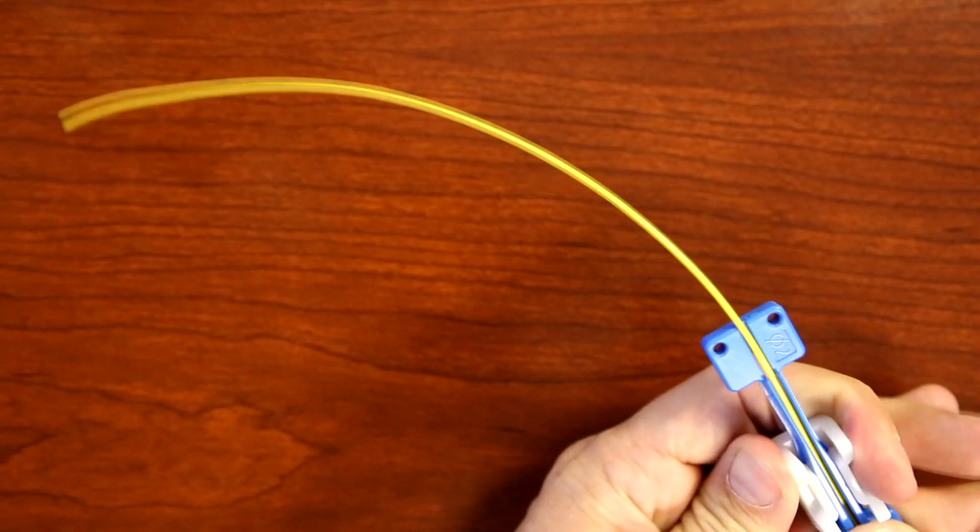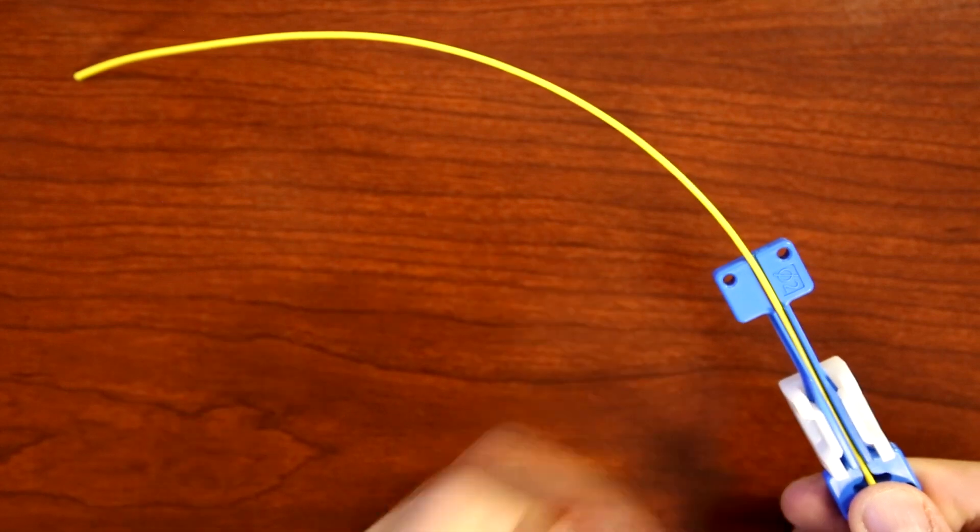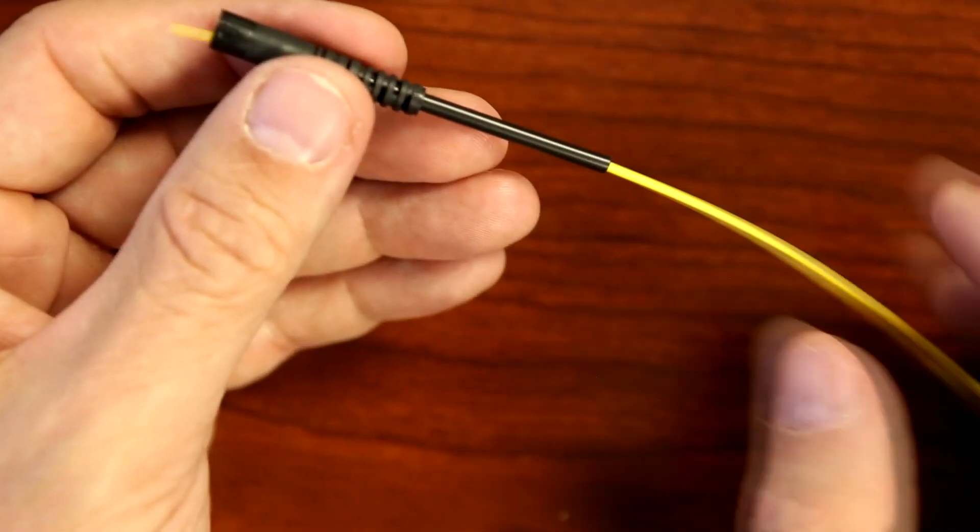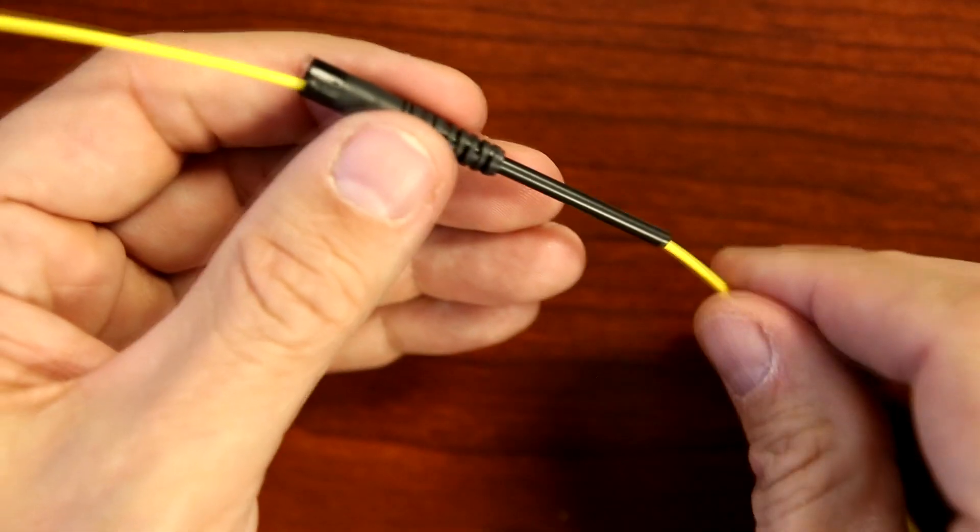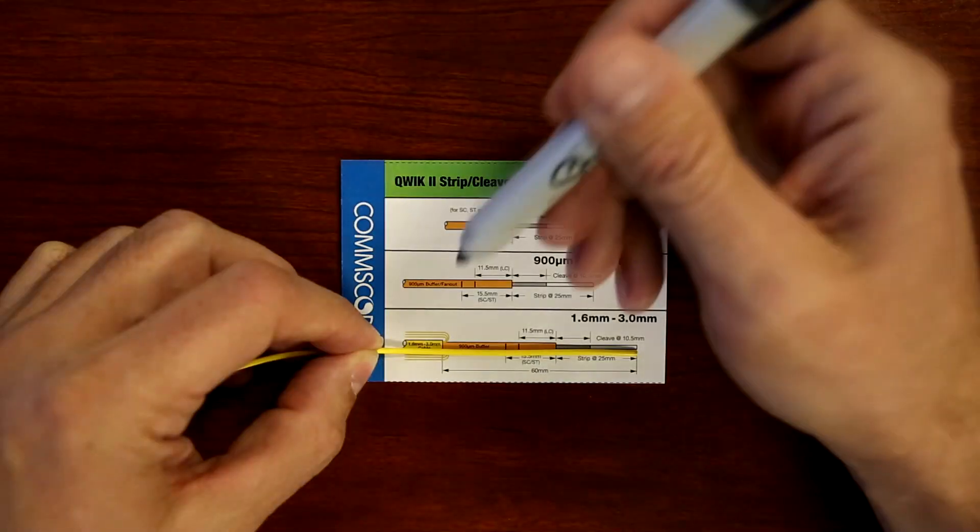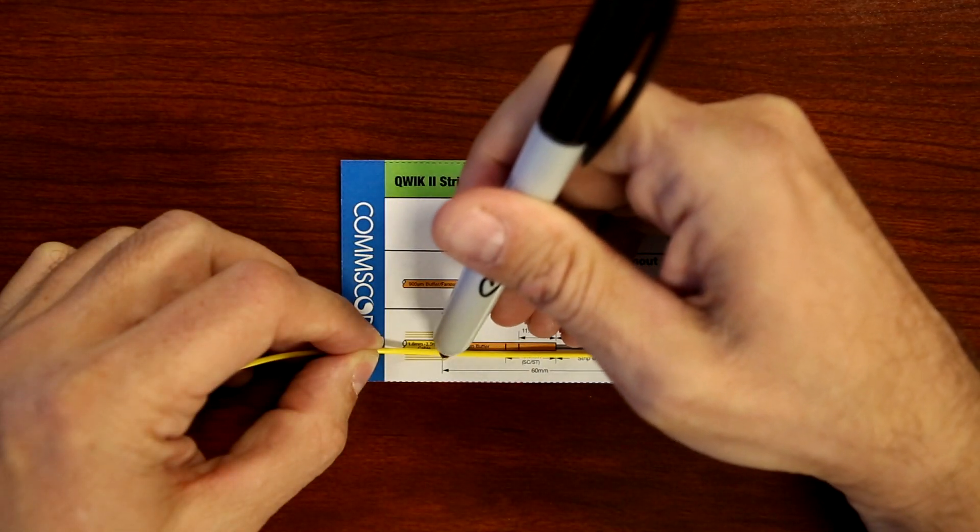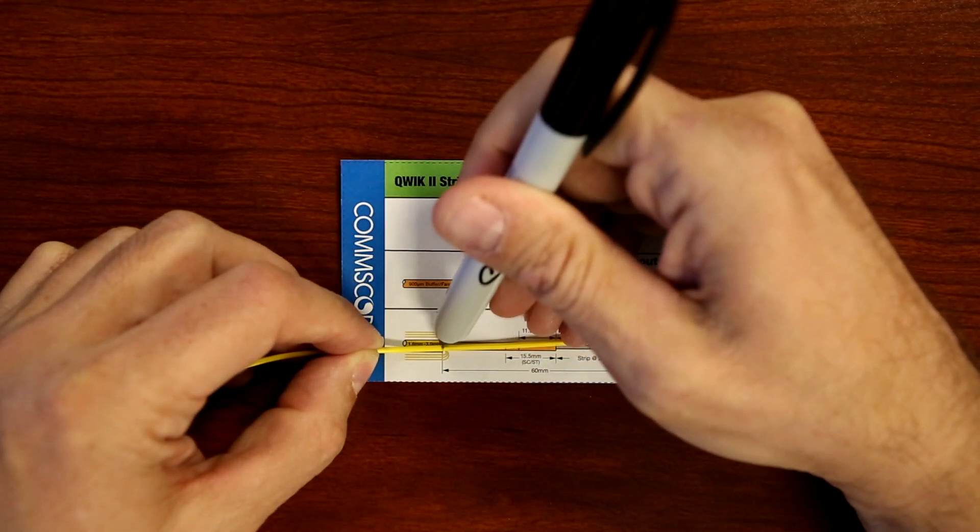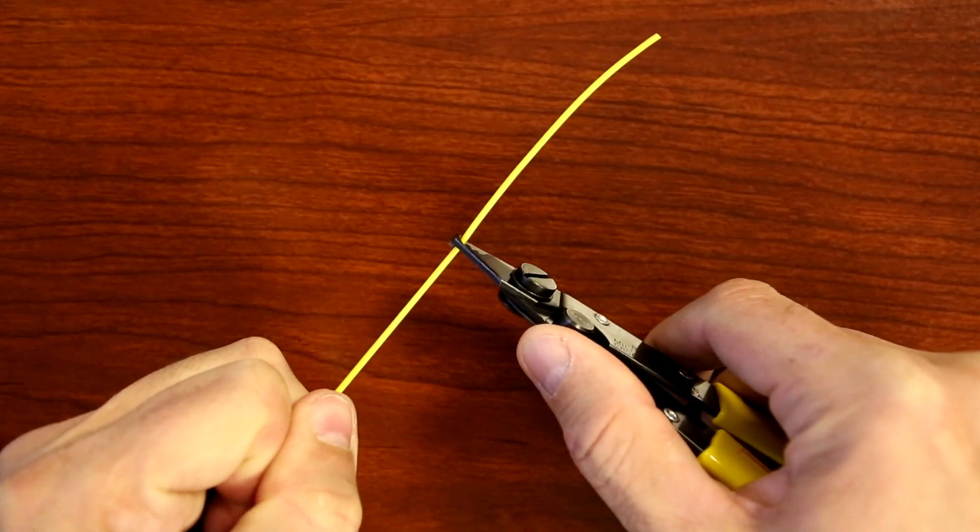Place the 2mm or 3mm clamp 10 inches from the end of the cable. Slide the appropriate boot onto the cable. Using the strip length template, mark the fiber at 60mm. Now strip off 60mm of the cable jacket.